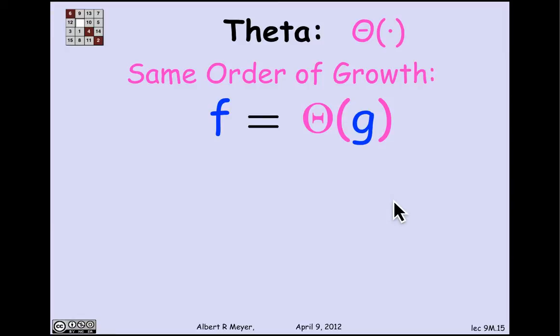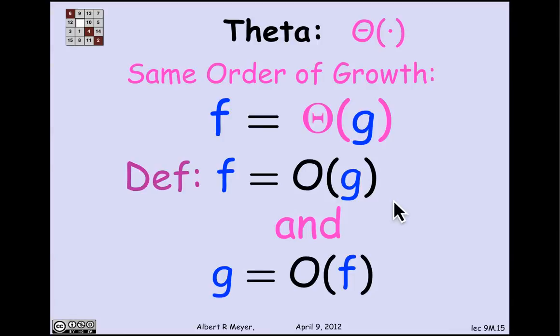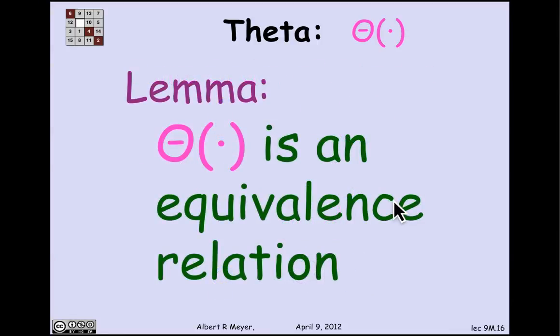The final relation of the four is called theta, or same order of growth. The definition of f is theta of g is simply that f is O of g, and g is O of f. It's easy to show from the definition that theta is an equivalence relation.